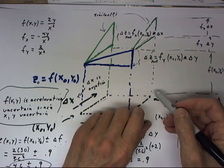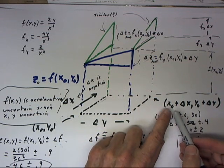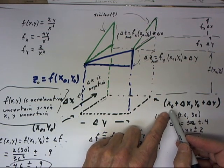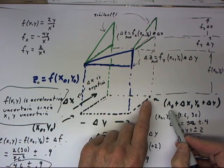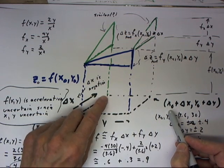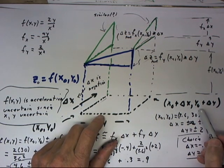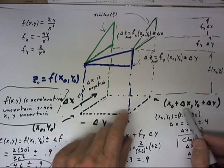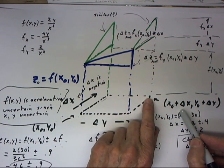If we consider where we are in the xy plane, if we move this negative delta x, we're back here for our x coordinate. Our y coordinate will be y0 plus delta y, and we're going to be at this point.